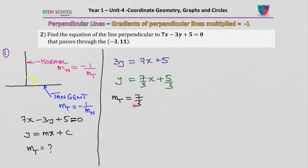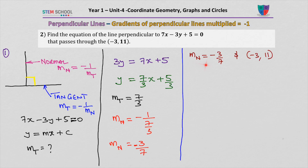So now m tangent, the gradient of the tangent, is 7 over 3. I want to use that to find the gradient of the normal, so placing the value 7 over 3 in, that becomes minus 3 over 7 for the normal. This is the gradient of the normal, and then it passes through that point.